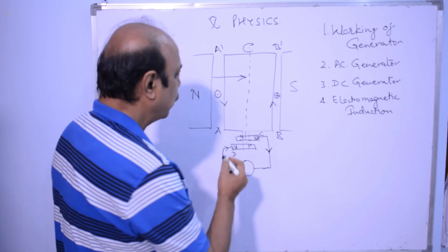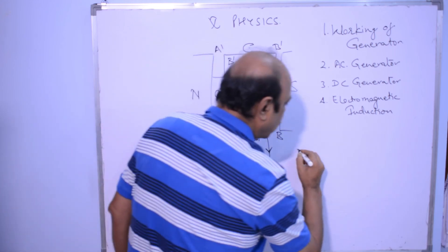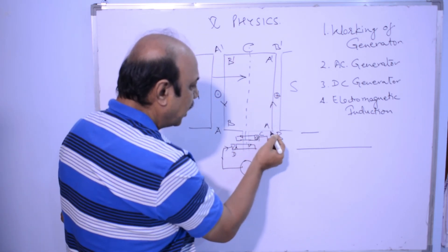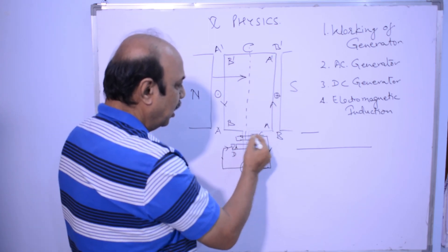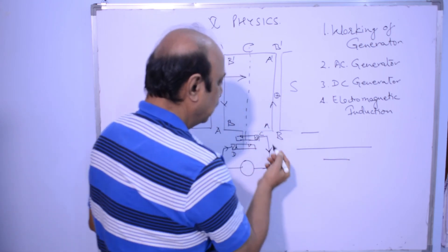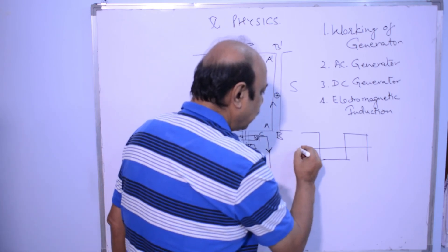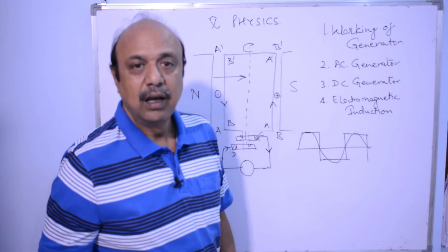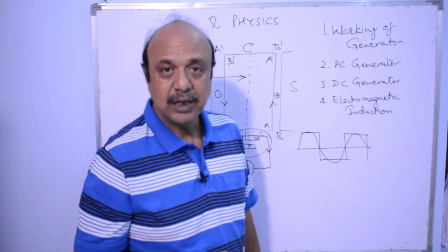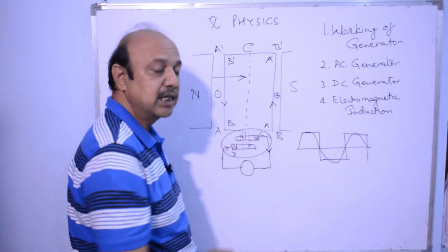After half a rotation, A comes here, A-dash comes here, B comes here, B-dash comes here. In the second half of the rotation, current is now flowing from A to A-dash — not from A-dash to A — which means the current changes its direction. Again, after another half rotation, the current changes direction again. So it becomes a sinusoidal wave. This is the alternating current generator. In the AC generator, we use two full slip rings, and the two conductors are connected separately to those slip rings.